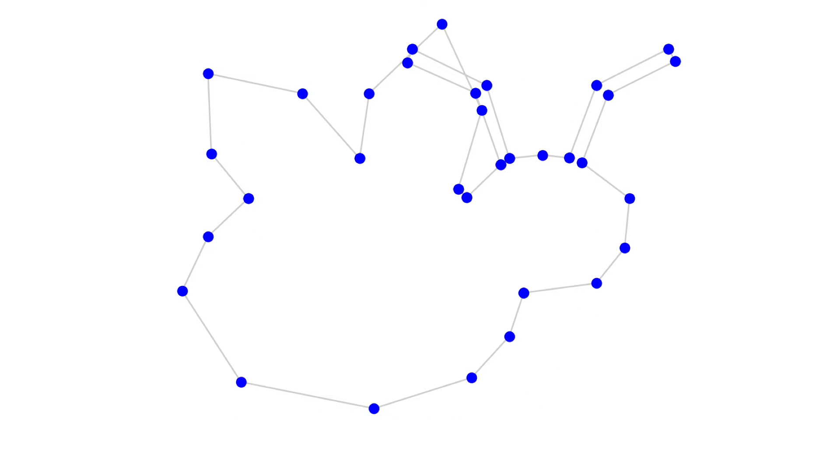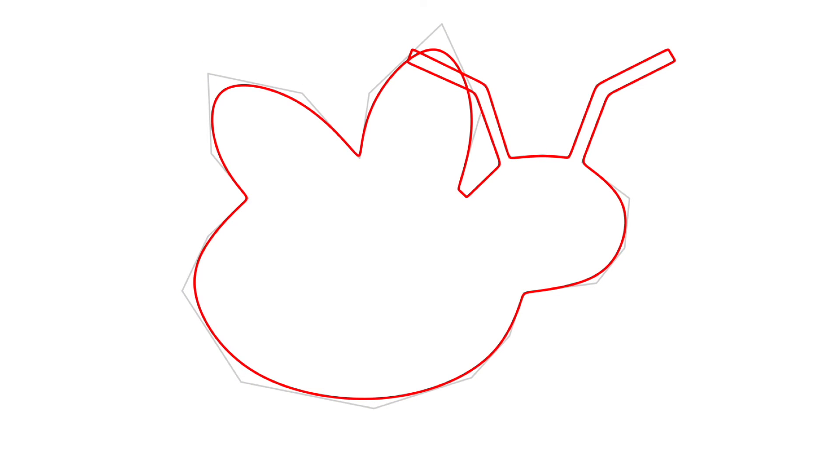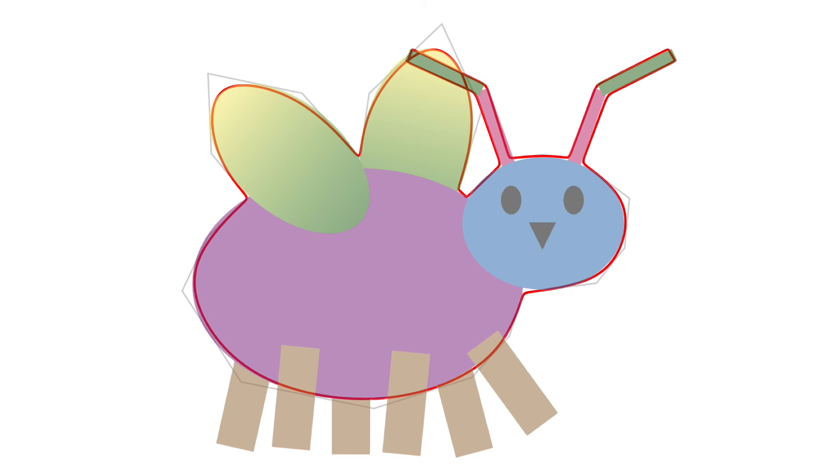You can make more interesting subdivision shapes with more control points. Does this one look familiar? It's a bug. But how did we get the antennas to be so straight?